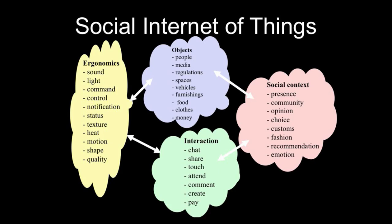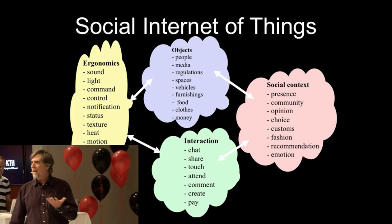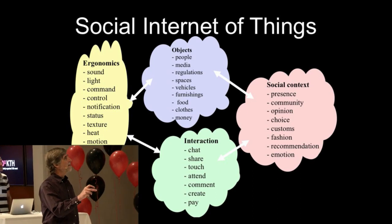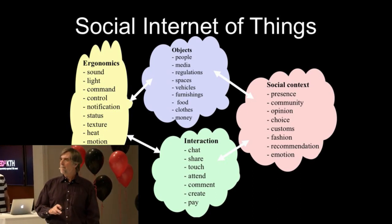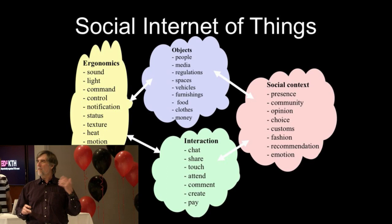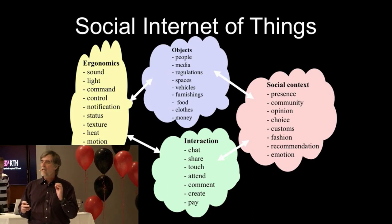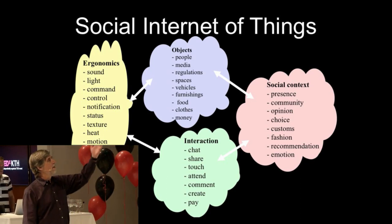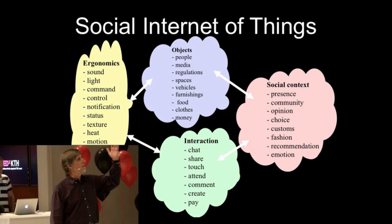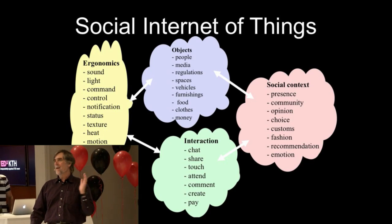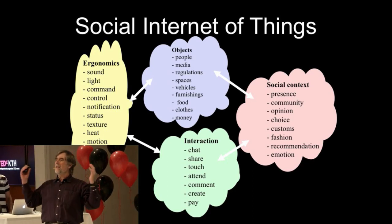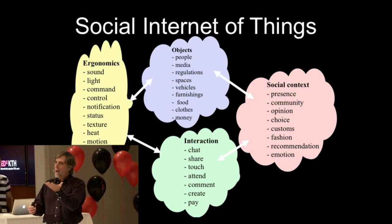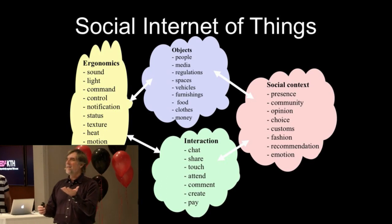The first thing is: what are they? The object itself, the gadget itself, becomes more than just a box full of integrated circuits. It now involves all of these pieces — some of them familiar. The Internet of Things definitely is going to involve people. You now have attributes that have something to do with IT. But these other ones as well: media, regulation, spaces, vehicles, furnishings, clothes, money. These are all now things that become objects or devices that have IT properties.